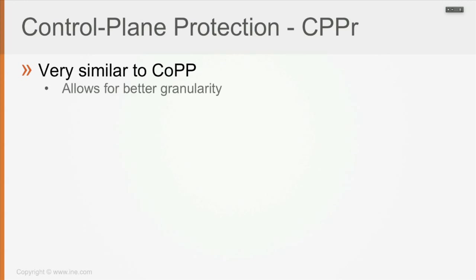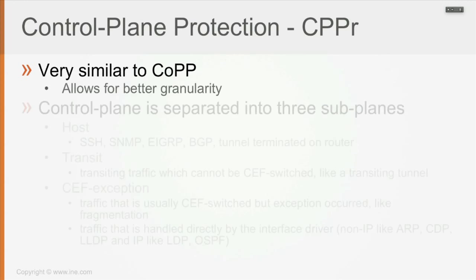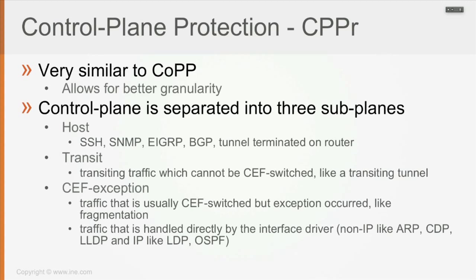What CPPr does is split all of the control plane protocols into three sub-planes, or sub-interfaces as Cisco calls them: the host sub-interface, the transit sub-interface, and the CEF exception sub-interface.